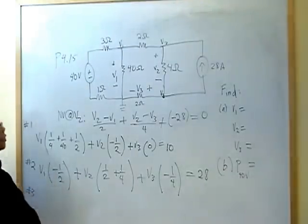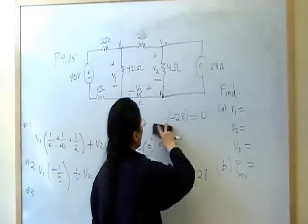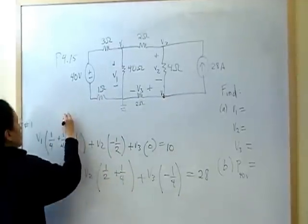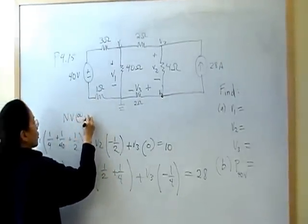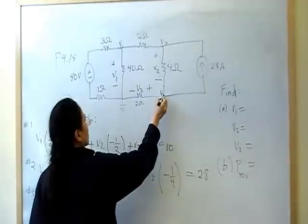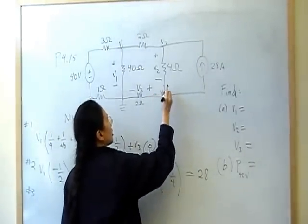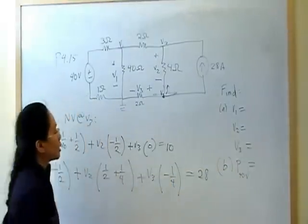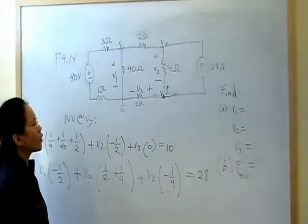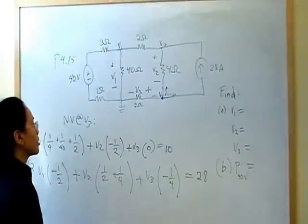Now, I need to do my third equation, which is going to come from V3, the third node. So node voltage at V3. So remember, when I'm doing my node voltage equations, I'm going to the third node and writing down and doing KCL, which means I'm finding all the currents that is leaving the node and the sum of it has to be zero.